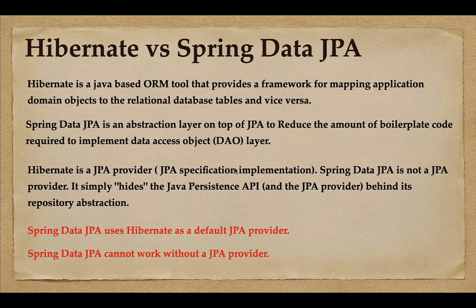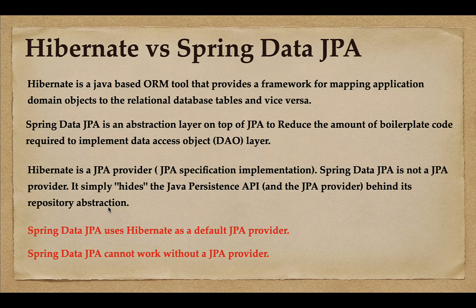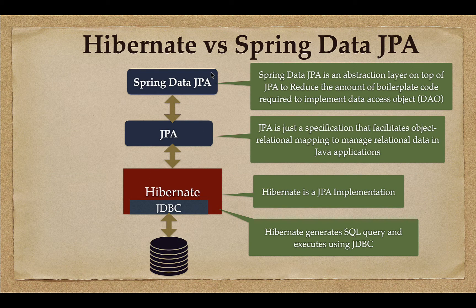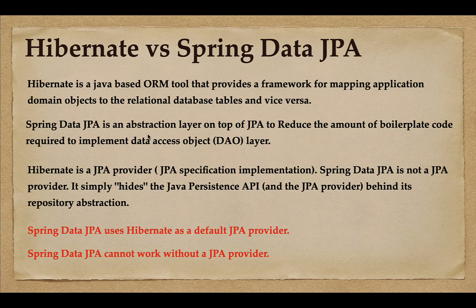Hibernate is a JPA provider — it implements the JPA specification. Spring Data JPA, on the other hand, is not a JPA provider. Spring Data JPA simply hides JPA behind its repository abstraction; it is developed as an abstraction layer on top of JPA to reduce the boilerplate code required to implement the DAO layer.